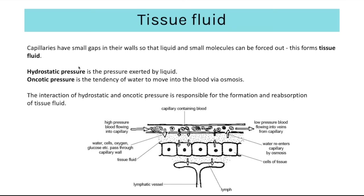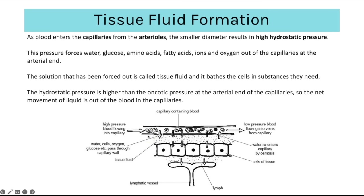Blood enters the capillaries from the arterioles. The arteriole has a wider diameter compared to the capillary, and the same volume of blood is forced into a smaller space, resulting in high hydrostatic pressure. Because hydrostatic pressure is high at this arteriole end of the capillary, it forces out water and small molecules such as glucose, amino acids, fatty acids, ions and oxygen. That liquid is called tissue fluid and the substances forced out can move into cells as needed.